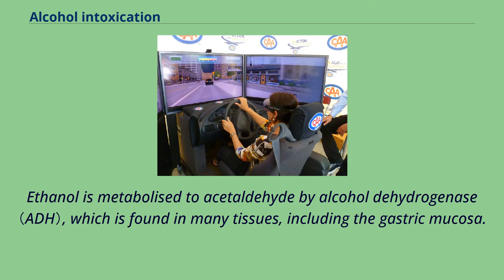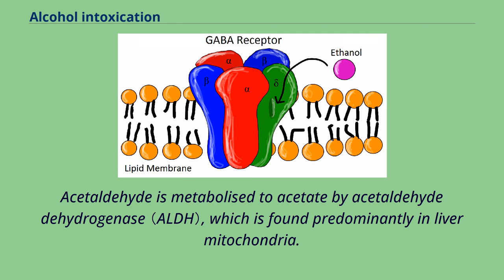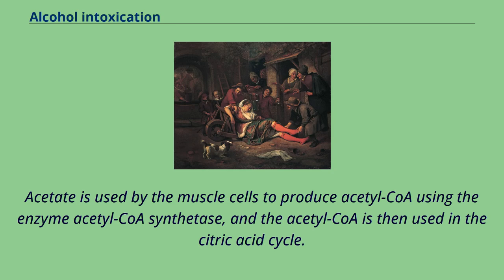Ethanol is metabolized to acetaldehyde by alcohol dehydrogenase, which is found in many tissues, including the gastric mucosa. Acetaldehyde is metabolized to acetate by acetaldehyde dehydrogenase, which is found predominantly in liver mitochondria. Acetate is used by the muscle cells to produce acetyl-CoA using the enzyme acetyl-CoA synthetase, and the acetyl-CoA is then used in the citric acid cycle.